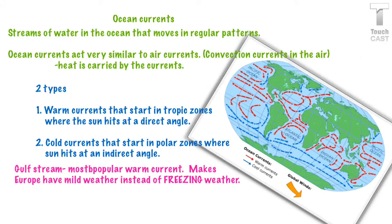So here's our last slide. Let's talk really quickly about ocean currents. There's streams of water in the ocean, and they move in these regular patterns that are shown in this picture. Ocean currents act very similar to the air currents, convection currents in the air. This is just convection currents in the water. And this heat is going to be carried by the currents. We have the red currents, which are warm currents that start in that tropic zone around the equator, where the sun's hitting it at a direct angle. Then we have our cold currents, which are our blue ones, that start in the polar zones where the sun's hitting it at an indirect angle. And just know that the Gulf Stream is the most popular warm current, and it makes Europe have mild weather instead of freezing weather.